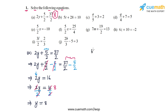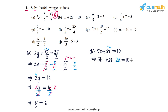In part b, the equation is 5t plus 28 is equal to 10. The first step is to get rid of this 28 by subtracting 28 from both sides. The original LHS is 5t plus 28, equal to 10 on the RHS. Subtracting 28 from both sides: on the LHS these terms cancel out, on the RHS we have 10 minus 28, which is minus 18. So we get 5t is equal to minus 18.